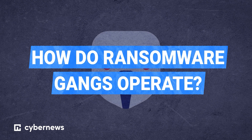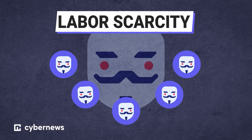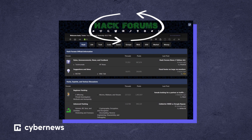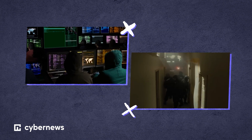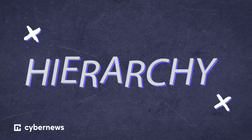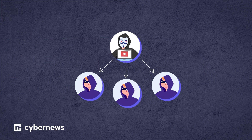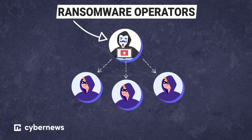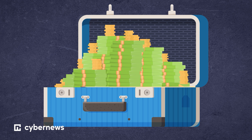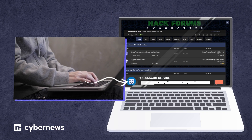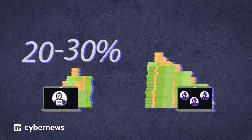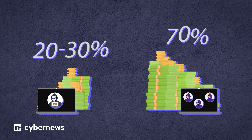Ransomware gangs are now trying to address their labor scarcity by hiring new members. A few years ago, they would blatantly put ads on hacker forums looking for affiliates. Today, this isn't as common due to the focus on ransomware by legal entities — it can end up being a who-you-know hiring situation. The hierarchy usually involves two major parties: the ransomware operators, who develop the malware, and the affiliates. A very lucrative share of earnings is put on the table — in one example, ransomware operatives were looking to take only 20–30% for themselves, offering 70% of earnings to affiliates.